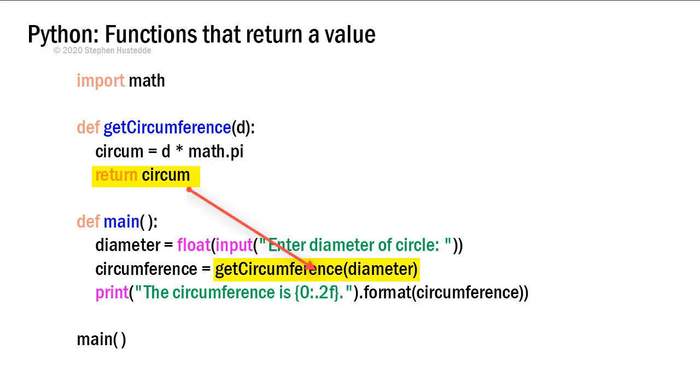So circum then is assigned to circumference, and then we simply print the value of circumference. If I left the return statement off in my getCircumference method, I would get an error because I'm assigning a value to circumference based on that method.